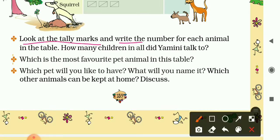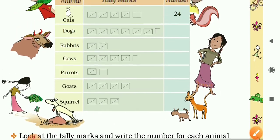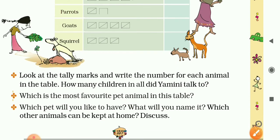Now for the questions: we have already written the number for each animal in the table. How many children in all did Yamini talk to? — 131. Which is the most favorite pet animal? — Dogs, with a total of 32. Remember that.